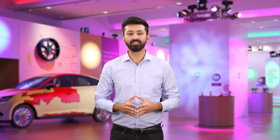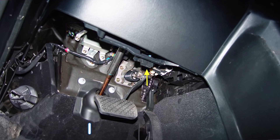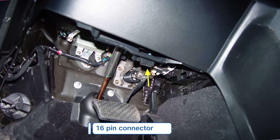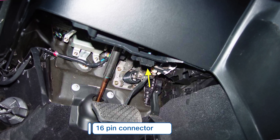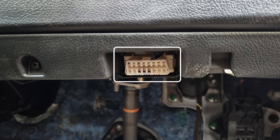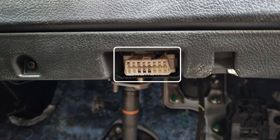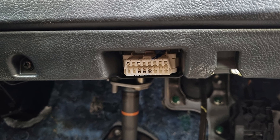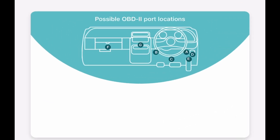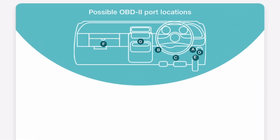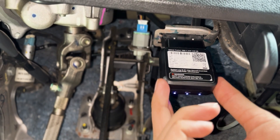Now, let's find the OBD2 port in your car. It's usually a 16-pin connector with a trapezoidal shape, mandated by the Indian government in most cars manufactured after 2010. Check the screen for probable locations A, B, C, D, E, F and G of the OBD2 port. And once found, plug in the GeoMotive device.